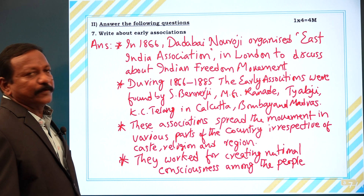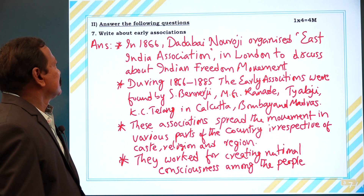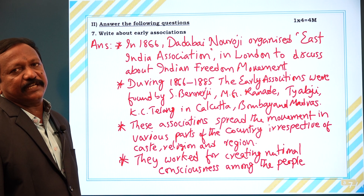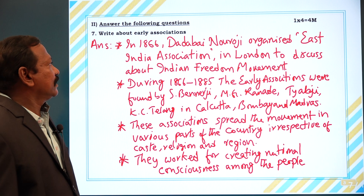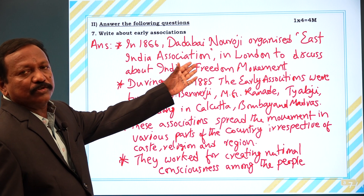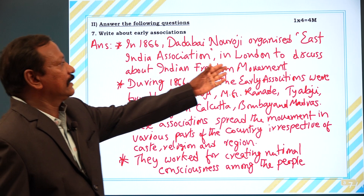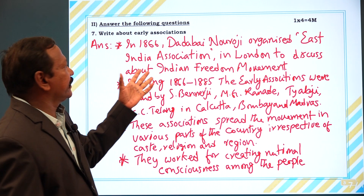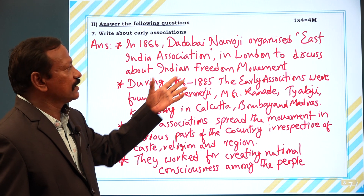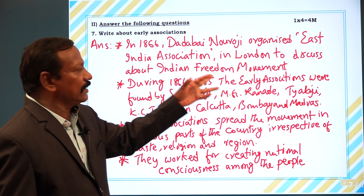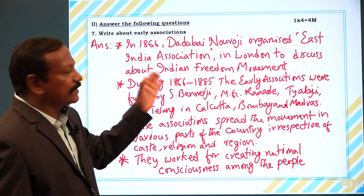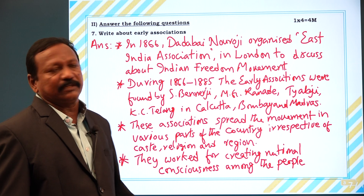Descriptive question, seventh question: Write about early associations. Answer: In 1866, Dadabhai Naoroji organized the East India Association in London to discuss about the Indian Freedom Movement.